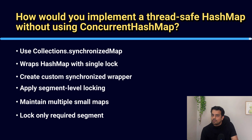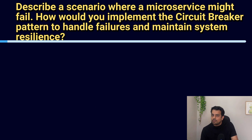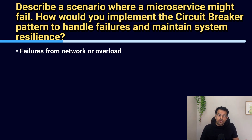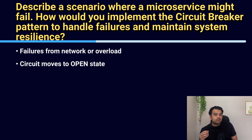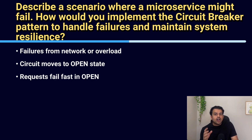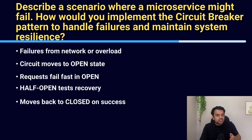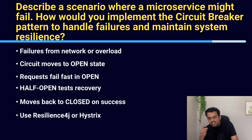Next question: describe a scenario where a microservice might fail and how you would implement the circuit breaker pattern. Microservices can fail due to network issues, timeouts, overload, or downstream unavailability. When repeated failures occur, the circuit breaker moves to the open state — all requests fail fast without calling downstream. After a timeout, it goes to half-open state to test if the service is healthy. If successful, it moves back to closed and resumes normal flow. We can implement this using libraries like Resilience4j or Hystrix, which prevents cascading failures and improves system stability.